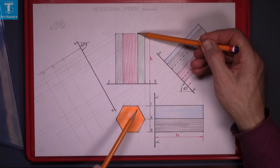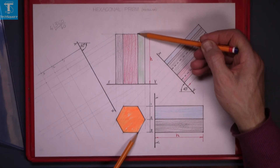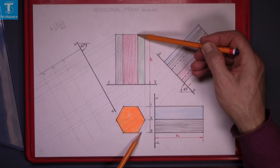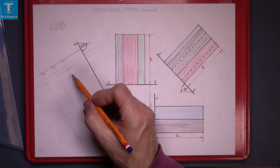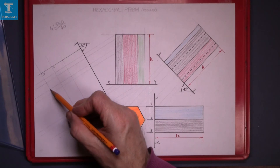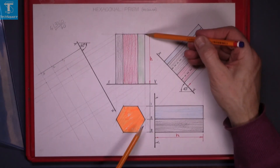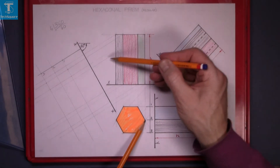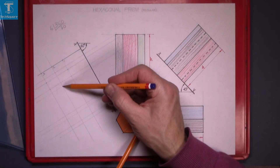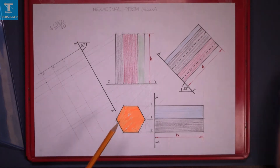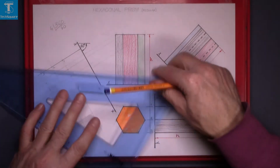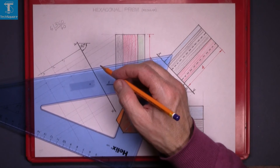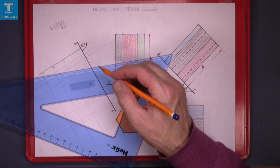The next point is shown here in the plan — it's on 1 and on 3, so follow down from the elevation and mark it on 1 and on 3. The last point is on 2, so project it down and mark it on number 2. Now line that in, and that's the top of the prism sitting at the angle.